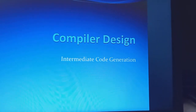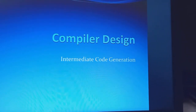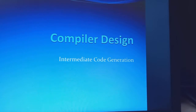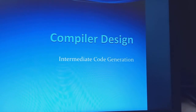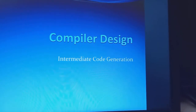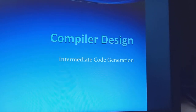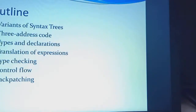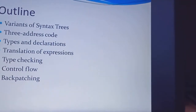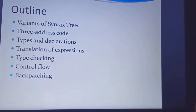In this video, I am going to explain the intermediate code generation. This is the second part of unit 3. Intermediate code generation is the fourth phase of any compilation process.